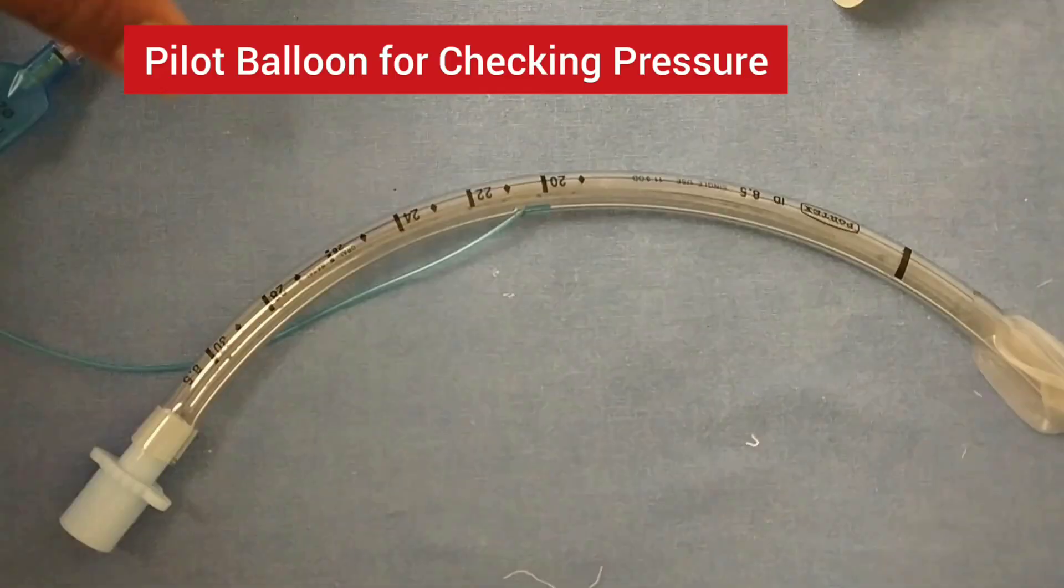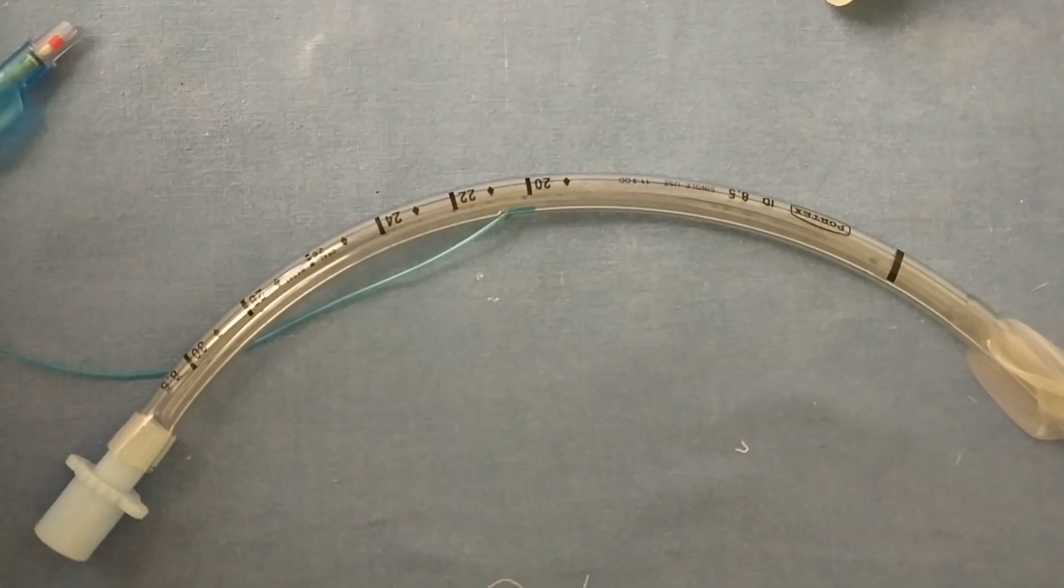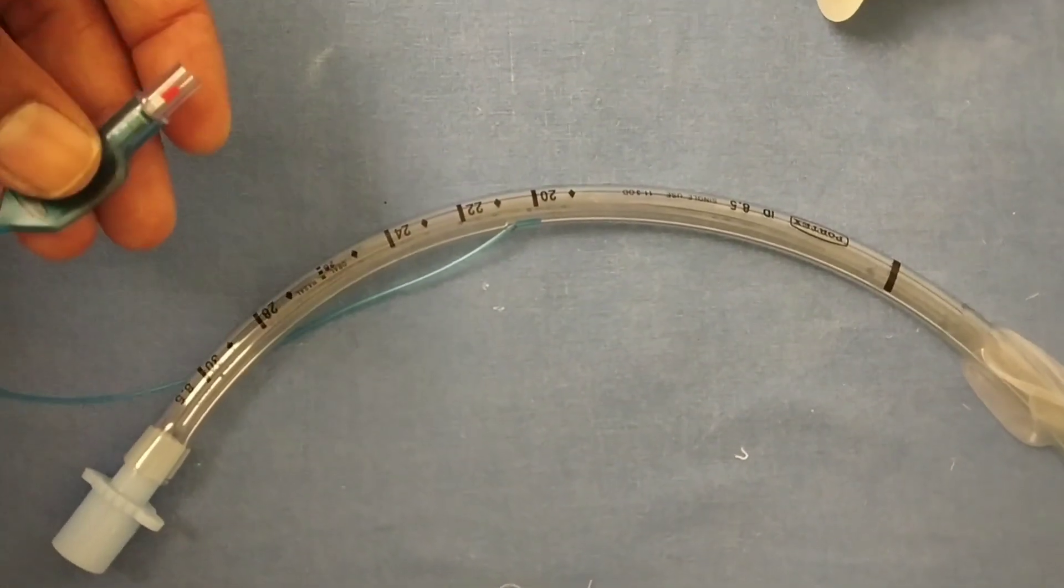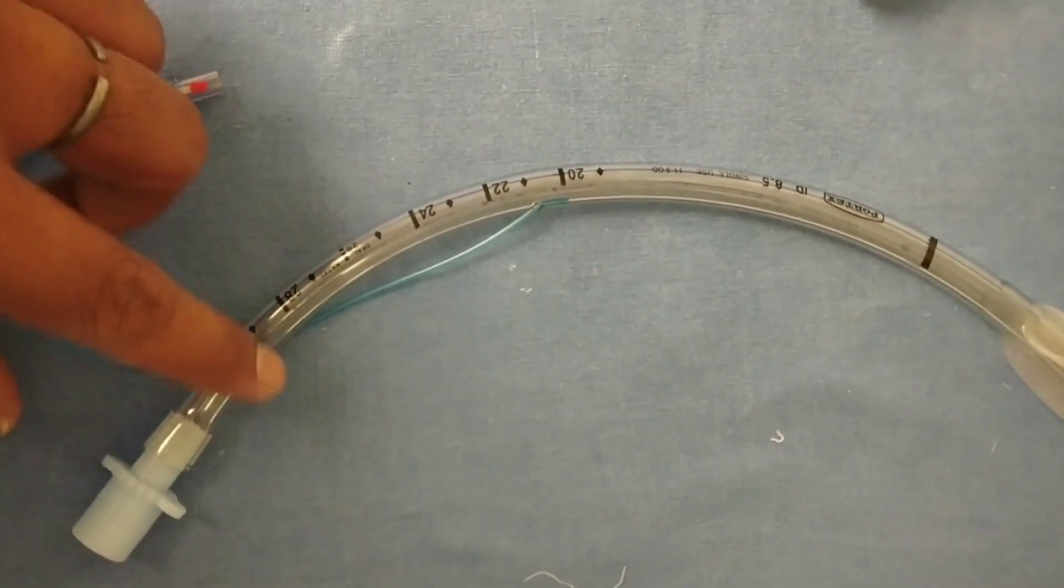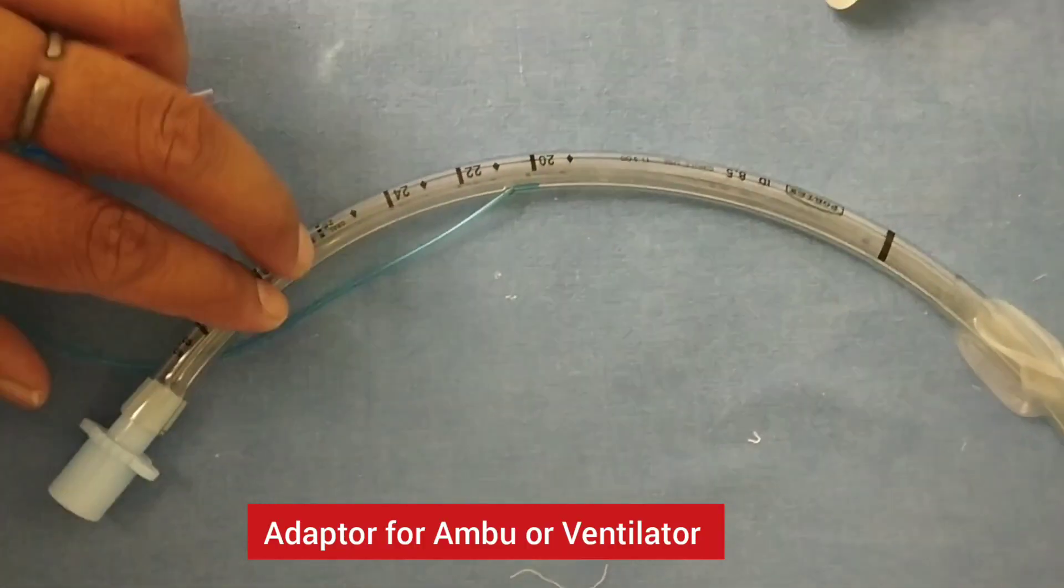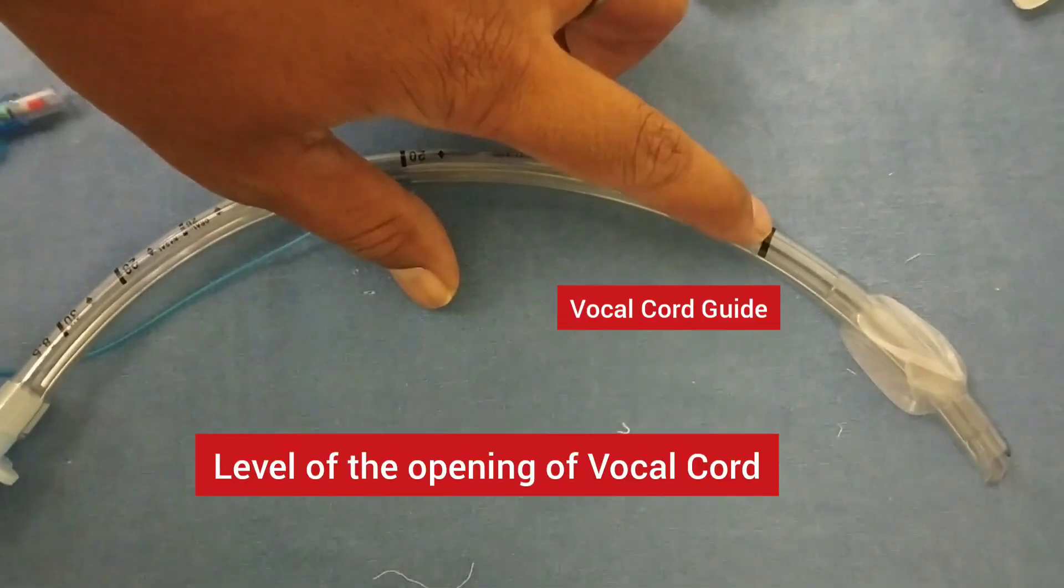These are softer, less irritant to mucosa, disposable to prevent the chances of infection, hypoallergic, and transparent which helps in visualization of the tube. The proximal end has a 15mm adapter, then there is marking including the black marking which is a vocal cord guide.